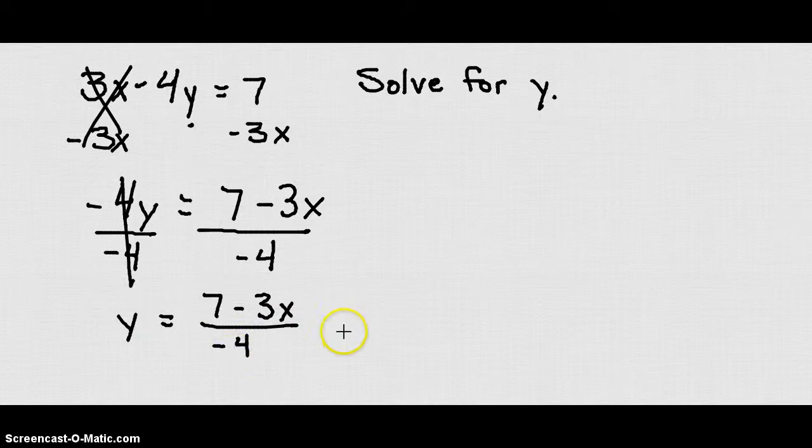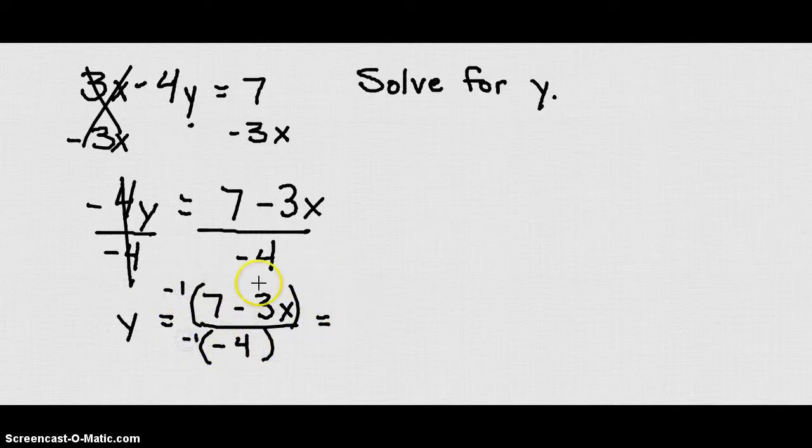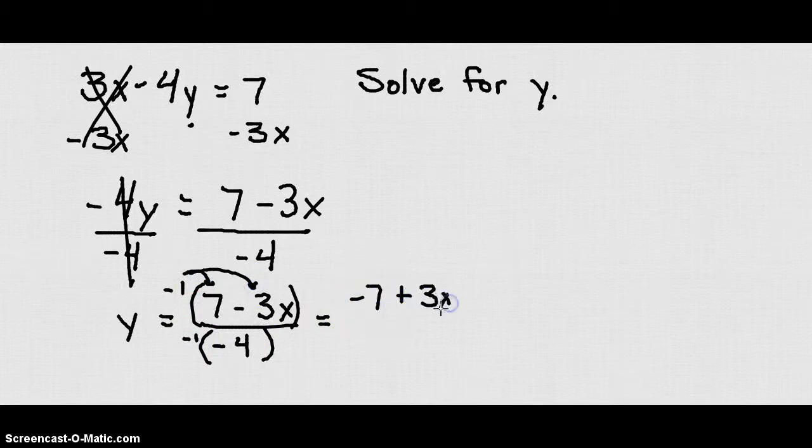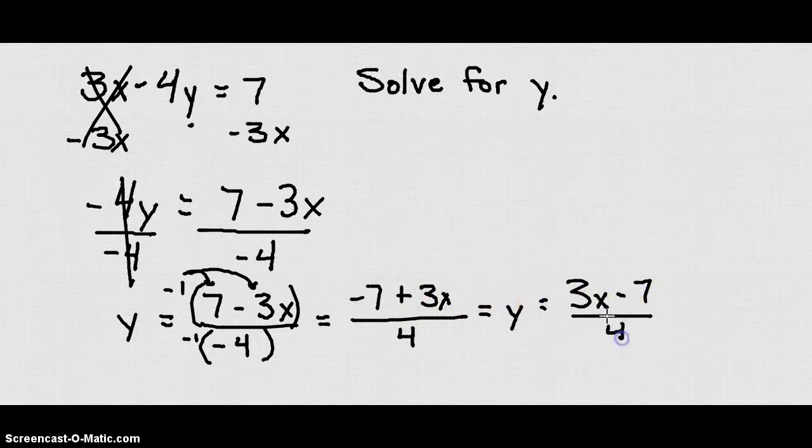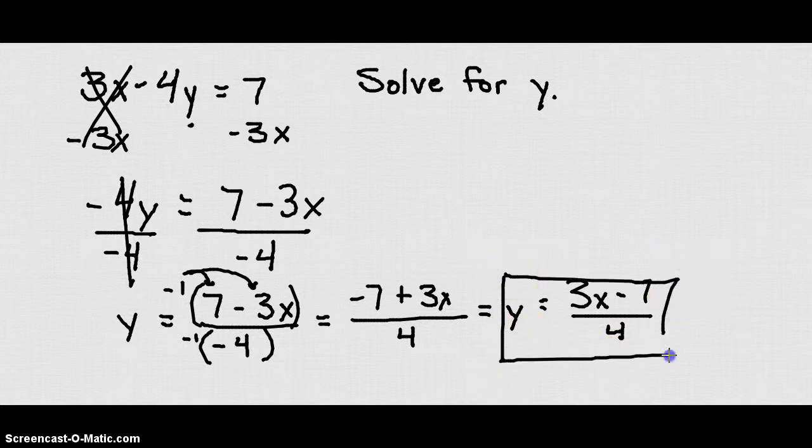Personally, I don't like the negative on the bottom, so I'm going to go ahead and change that by multiplying both the top and the bottom by negative 1. So if I multiply the top by negative 1, I get negative 7 plus 3x. If I multiply the bottom by negative 1, I get 4. So my answer is y equals negative 7 plus 3x over 4, or I could also write that 3x minus 7 over 4. You usually see the variable come first. So this is my final answer.